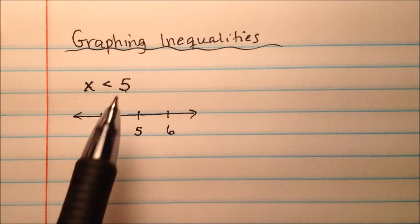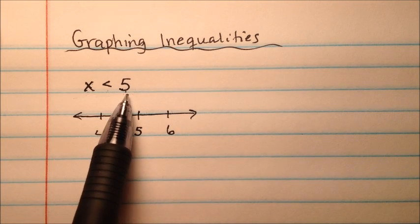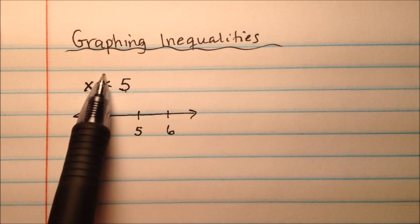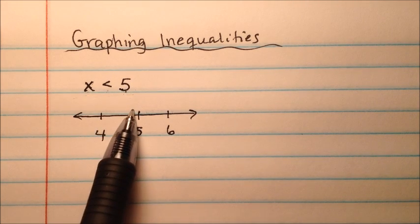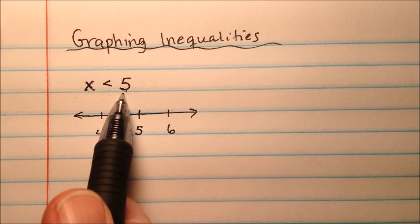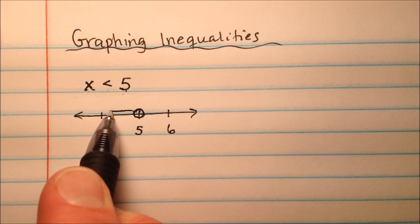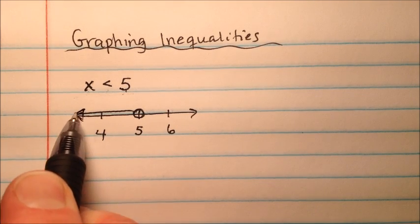So if x is less than 5, does it include 5? So is 5 less than 5? Well, no, that's not true. We just know we're going to start at 5 and go all the numbers to the left. So because it does not include 5, we're going to put an open circle at 5, and then we're going to put a line extending indefinitely to the left.